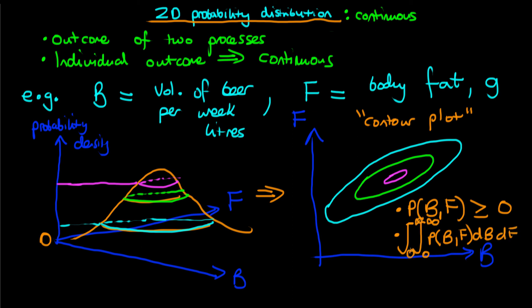It's zero here in both cases because you can't drink a negative volume of beer, nor can you have a negative level of body fat. And this integral must be equal to one. The intuition behind this condition is just saying that any individual that we pick from any population must belong somewhere in this plane that we've drawn here, where we've got positive levels of body fat and positive levels of beer drunk per week, or at least non-negative values of both of those things.